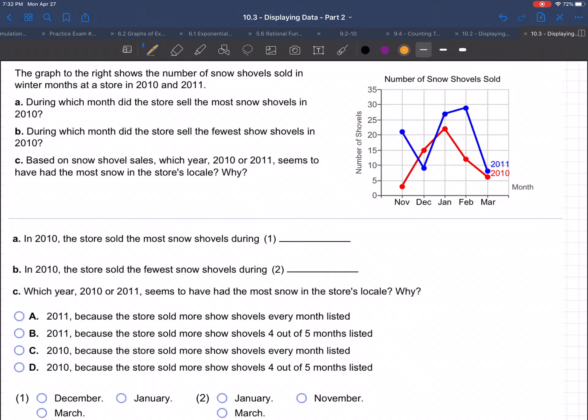Okay, so let's answer the questions here. They're saying in 2010, the store sold the most snow shovels during what month? So 2010 is the red graph. The highest is right here. That's in January.